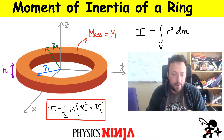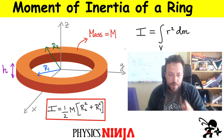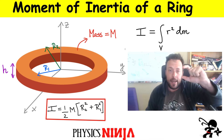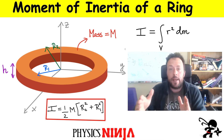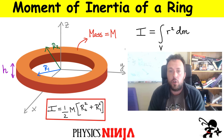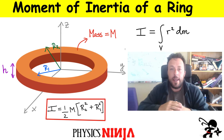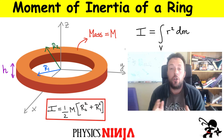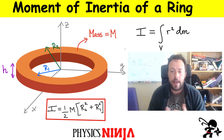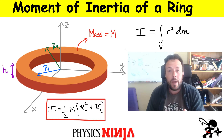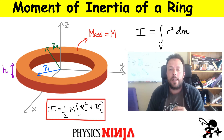This ring here is shown in the figure. It has a height h, an inner radius r1, an outer radius r2, and a uniform mass distribution. The total mass of the ring is uppercase M.